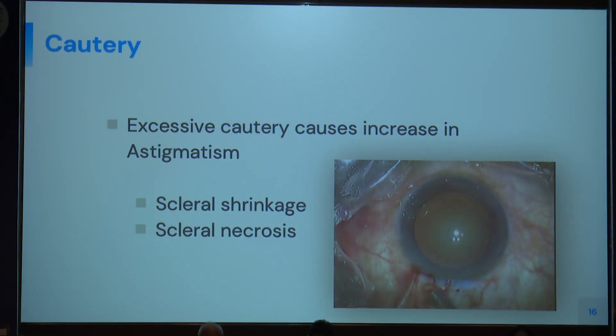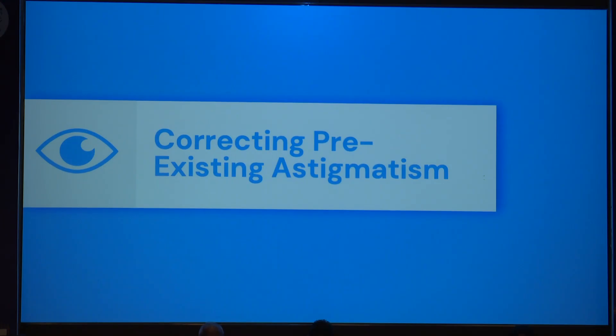Regarding cautery — excessive cautery causes scleral shrinkage and scleral necrosis, which may increase astigmatism.